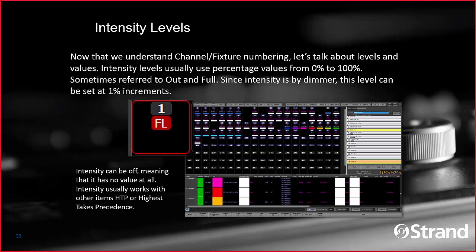Intensity levels usually use percentage from zero to 100. If a light is at 50%, you may not realize that's outputting DMX 127, because that's half of the full DMX value. We generally think of intensities in terms of highest takes precedence (HTP), so if you have house lights on a submaster but also have control of them in a cue, whichever is outputting the higher value will win. That's what HTP means.